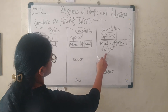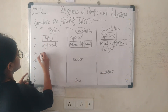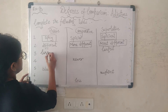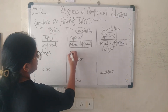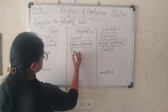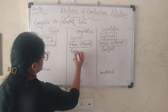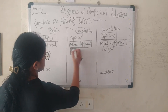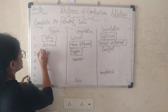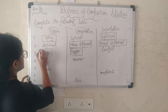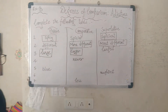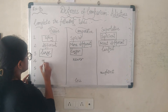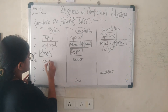The next entry has 'largest' given. The base form is 'large' and the comparative is 'larger' — 'largest' is already given. Next, 'newer' is given in the comparative column, so the base form is 'new' and the superlative will be 'newest'.